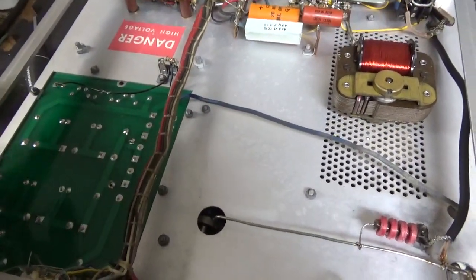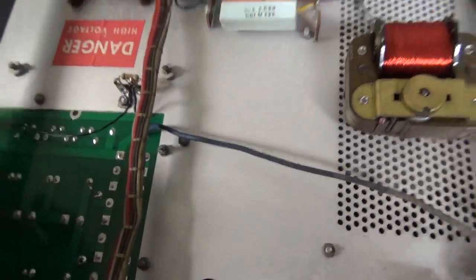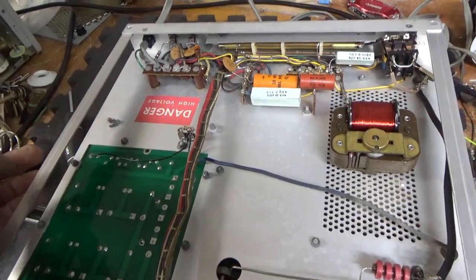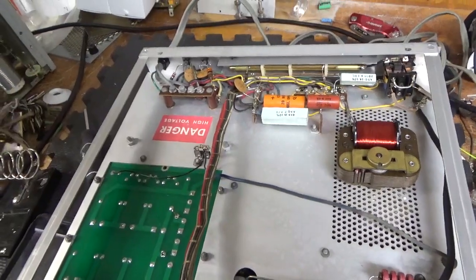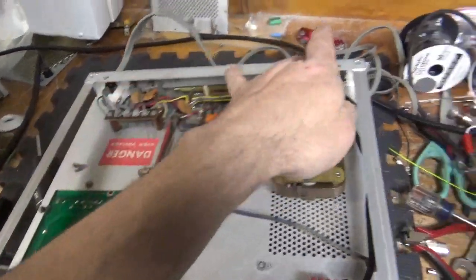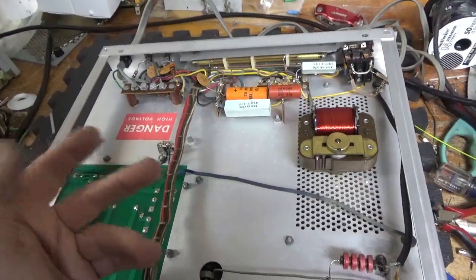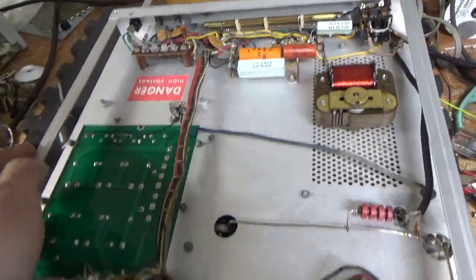Band switch looks okay. Air variables look okay. I'll change the grid loading resistors and the mica cap between the grid and ground. Compress the clips, clean the clips. Clean the relay, Deoxit Gold. Clean the output rotary switch, the band switch and the input rotary switch, Deoxit Gold.